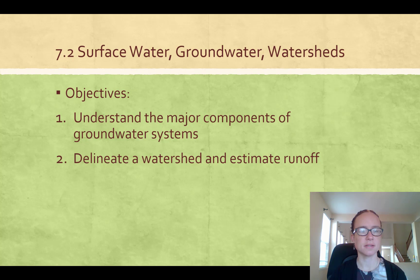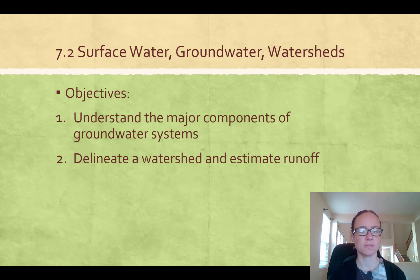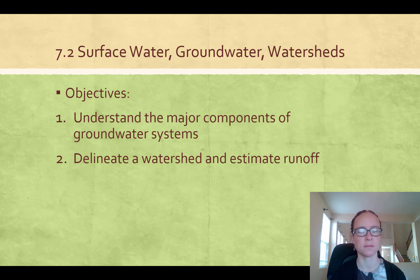We'll be on section 7.2: surface water, groundwater, and watersheds. The objectives related to this chapter are to understand the major components of groundwater systems and to delineate a watershed and estimate runoff. We'll probably just cover half of the second objective and do estimating runoff in the synchronous lecture.